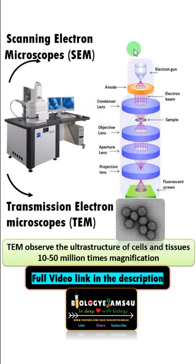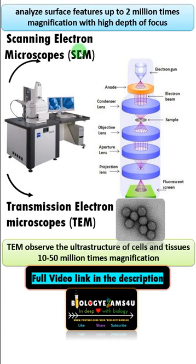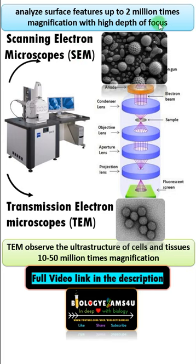A beam of electrons is generated and passed through the specimen in the case of TEM, whereas it scans the specimen in the case of SEM. Transmitted primary electrons are used to make the image in TEM, whereas SEM is used to analyze surface features up to 2 million times magnification with high depth of focus, often producing a three-dimensional image. Secondary electrons scattered from the specimen are used to make the image.